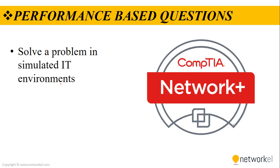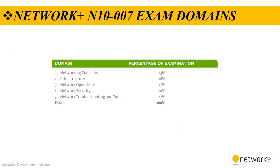For each performance-based question, the exam prompts the candidate to perform a specific task or solve a specific problem. This table lists the domains measured by the N10-007 examination and the extent to which they are represented. As you can see, there are five main domains: Networking Concepts, Infrastructure, Network Operations, Network Security, and Network Troubleshooting and Tools. They all have approximately the same importance. In this training, we are going to focus on all of these domains deeply so you can get your certification easily.